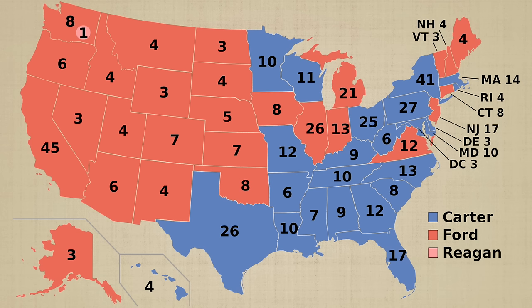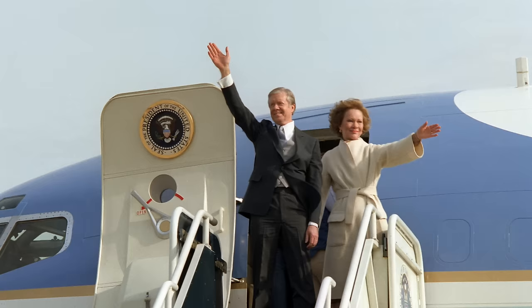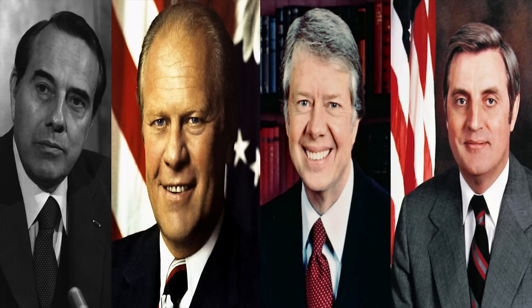Jimmy Carter won, becoming the 39th President in American history. He received 297 electoral votes; Gerald Ford received 240. Ford actually won 27 states and Carter just 23, making this the closest electoral vote result since the election of 1916. One faithless elector in Washington state gave their electoral vote to Ronald Reagan. The popular vote was fairly close too — Carter got 50.1% while Ford got 48%. Carter did well in the South and was the first Democrat since John F. Kennedy to carry states of the Deep South. Walter Mondale became the 42nd Vice President in American history. This election is notable because all four major party presidential and vice presidential candidates were, at some point in their lives, losers of a presidential election race.